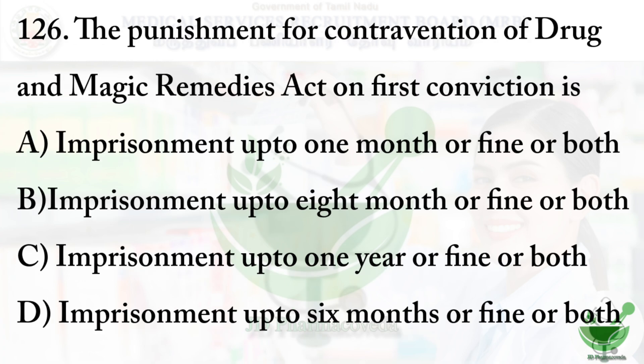Question 126: The punishment for contravention of Drugs and Magic Remedies Act on first conviction — Option A: imprisonment up to one month or fine or both. Option B: up to eight months or fine or both. Option C: up to one year or fine or both. Option D: up to six months or fine or both. The right option is option D, imprisonment up to six months or fine or both.